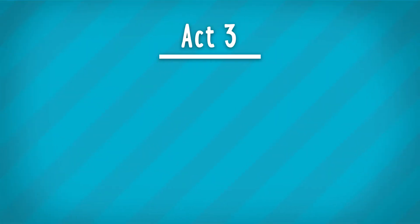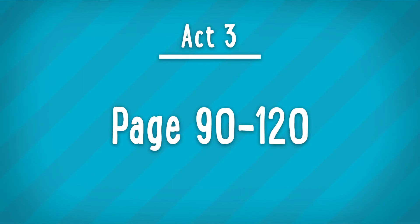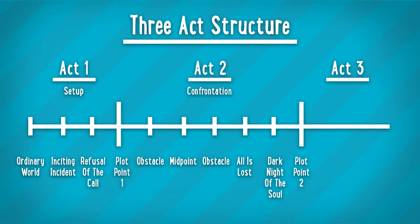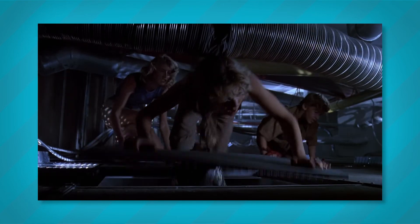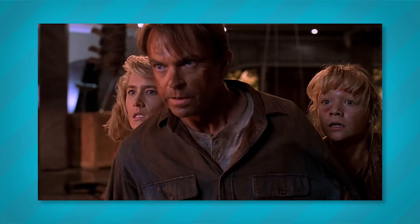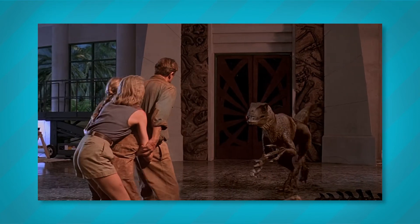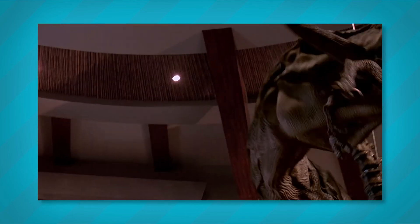Which now takes us to Act 3, which typically falls between page 90 and 120, but can be as short as only 15 pages. Field calls this act the resolution because it's where we wrap everything up that has been set up or built on throughout the film. This is where we finally get what we've all been waiting for — the climax. The climax is the main big showdown between your protagonist and the bad guys. It's usually the most dramatic set piece in the film and can be full of action. In Jurassic Park, it's where the raptors break into the visitor center and chase the kids, Dr. Grant, and Dr. Sattler. There can sometimes also be a twist in the climax to keep things interesting. Back at the visitor center, we get one of the most dramatic and memorable twists in cinema history — the T-Rex from Act 2 shows up and saves the day, proving once again that life finds a way.